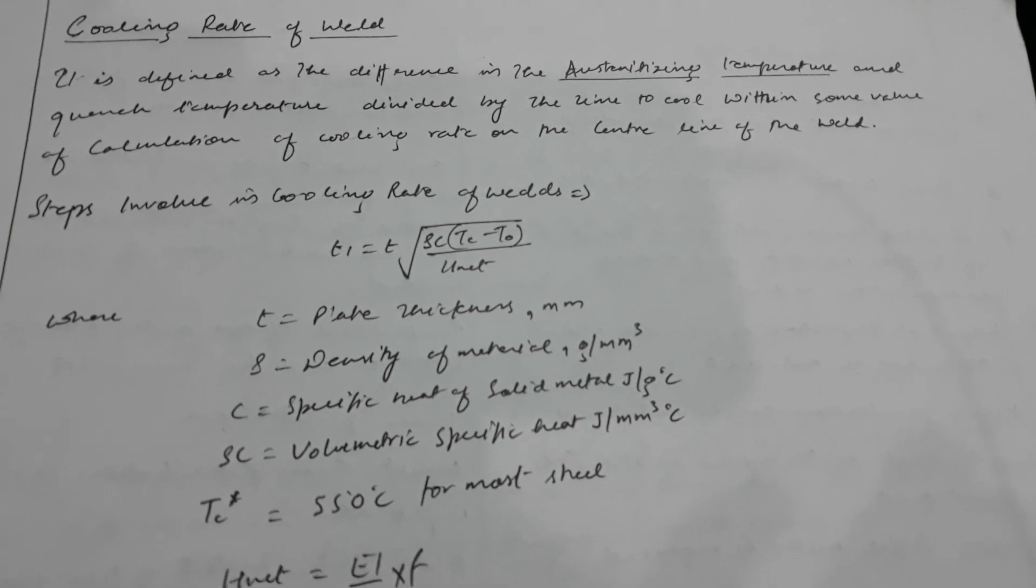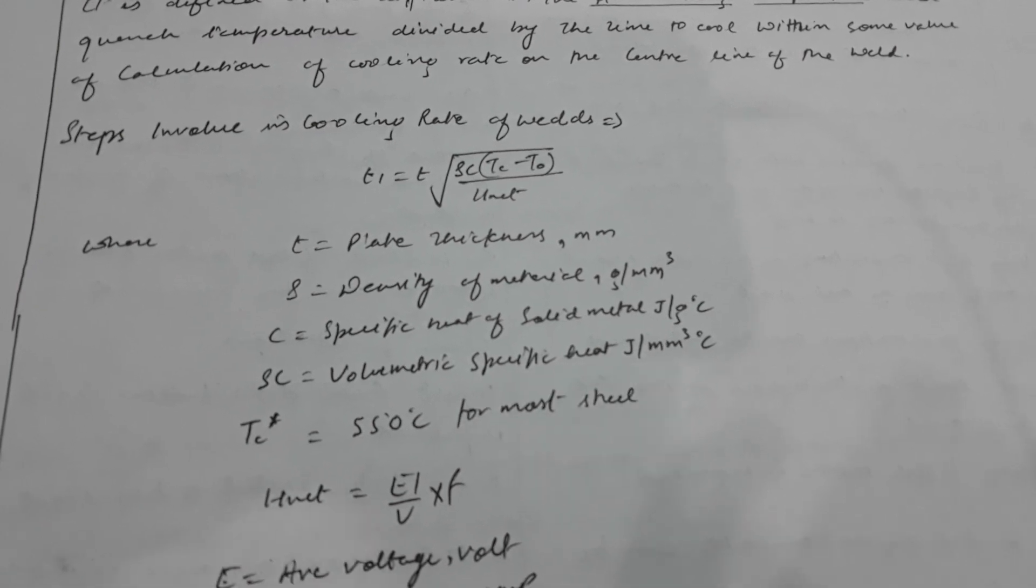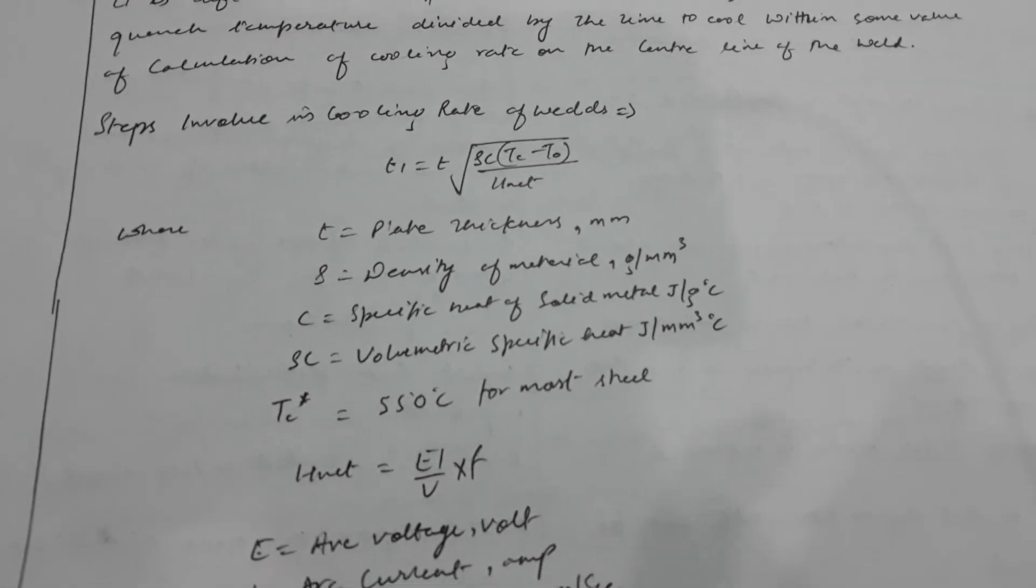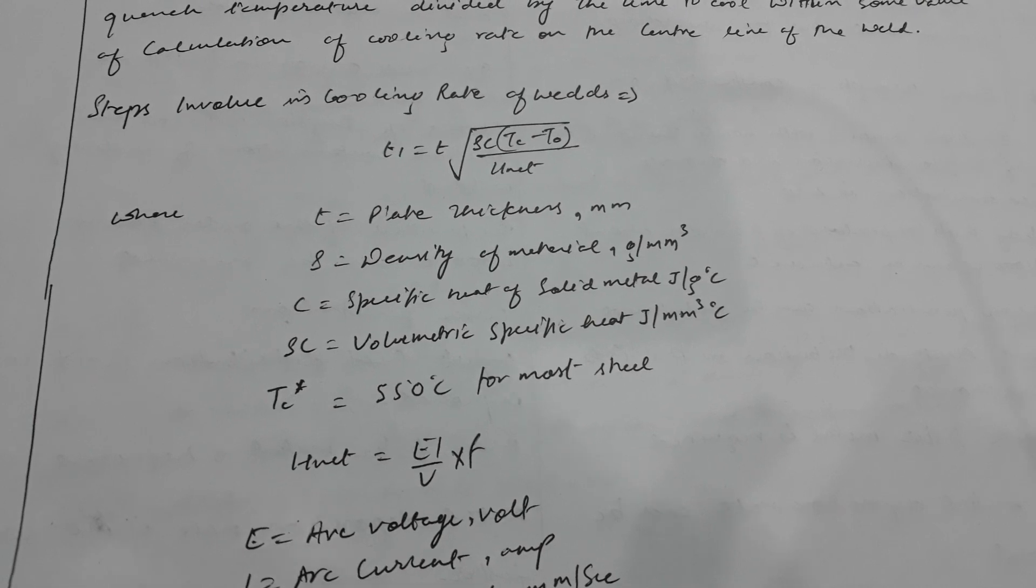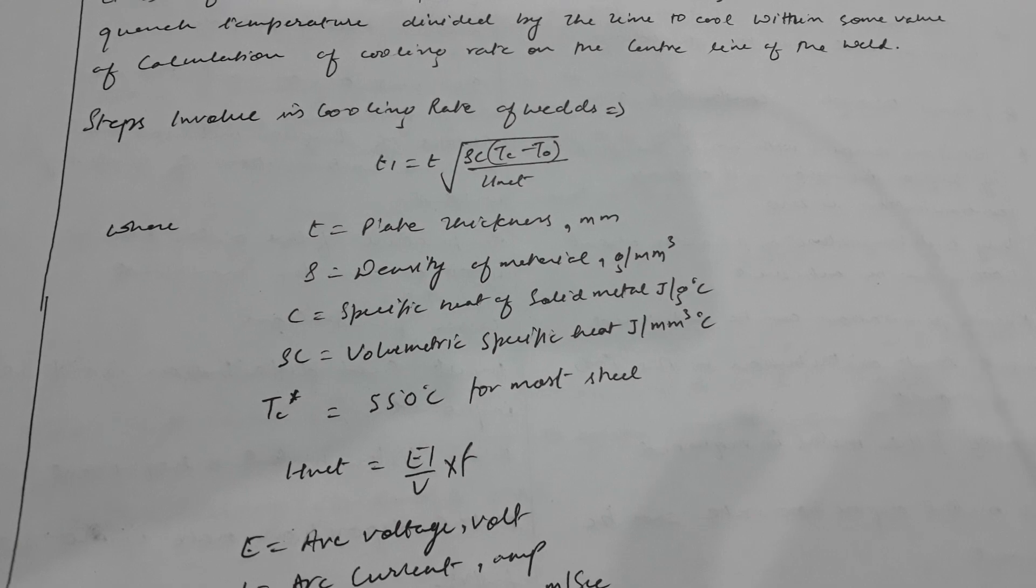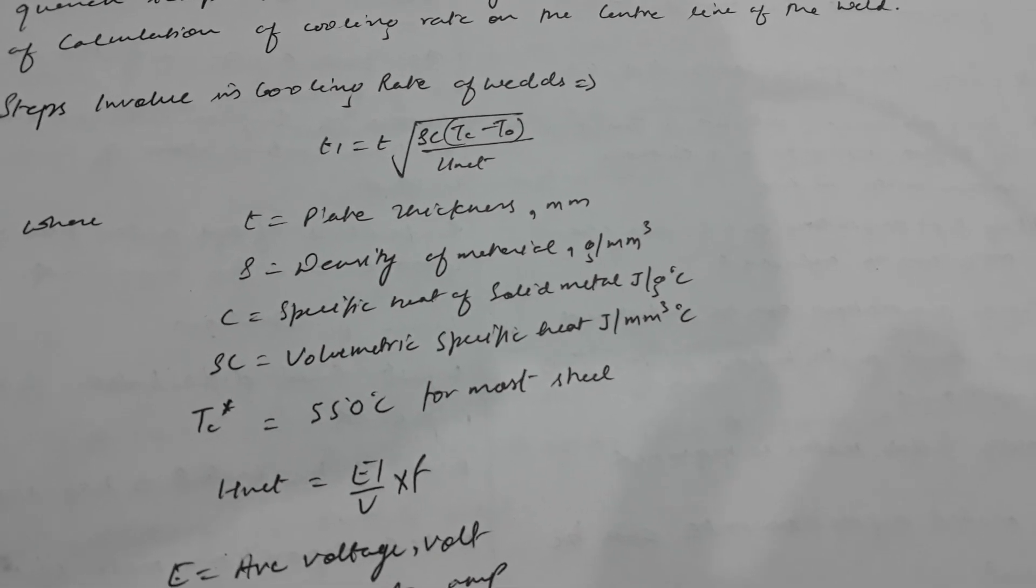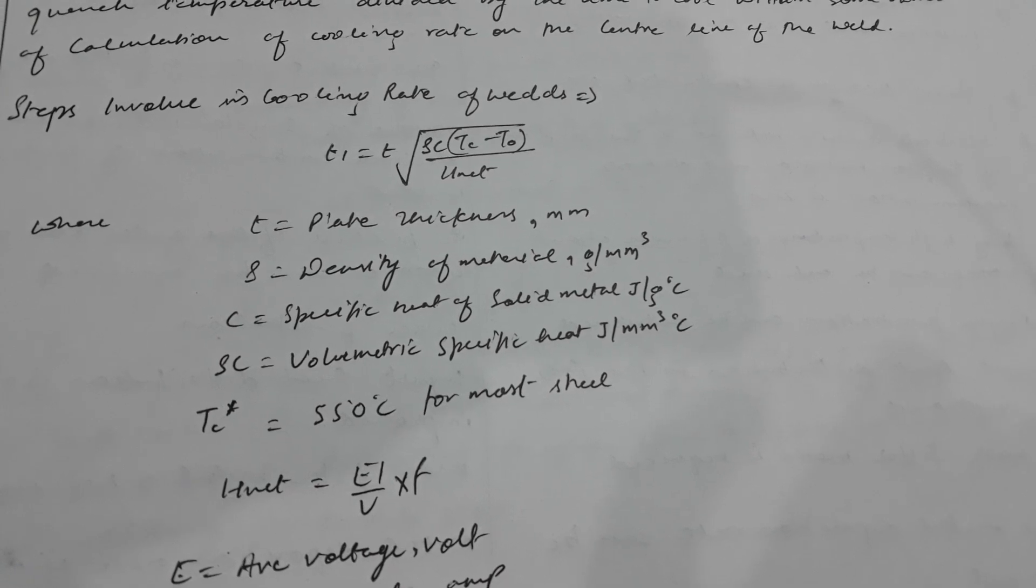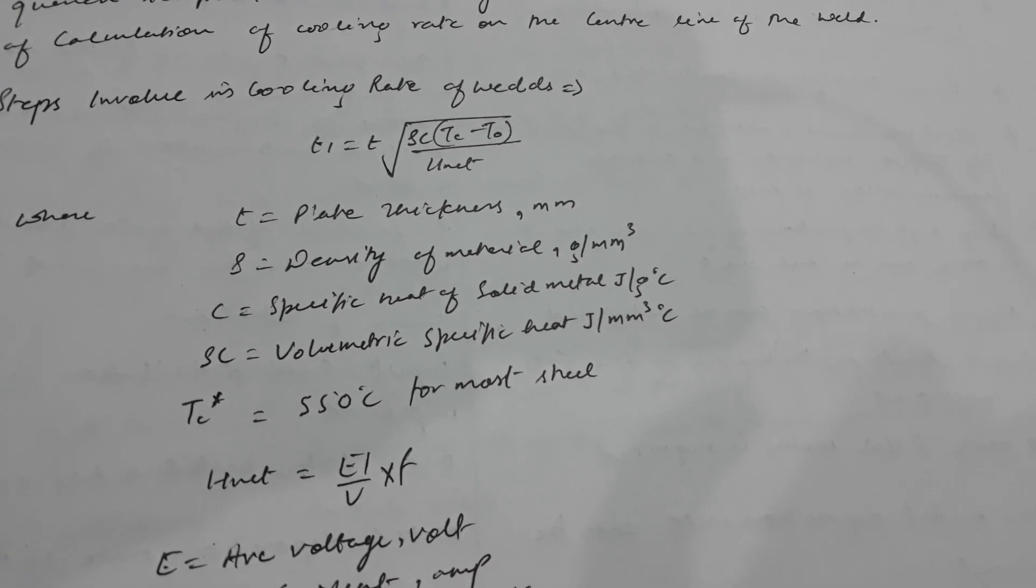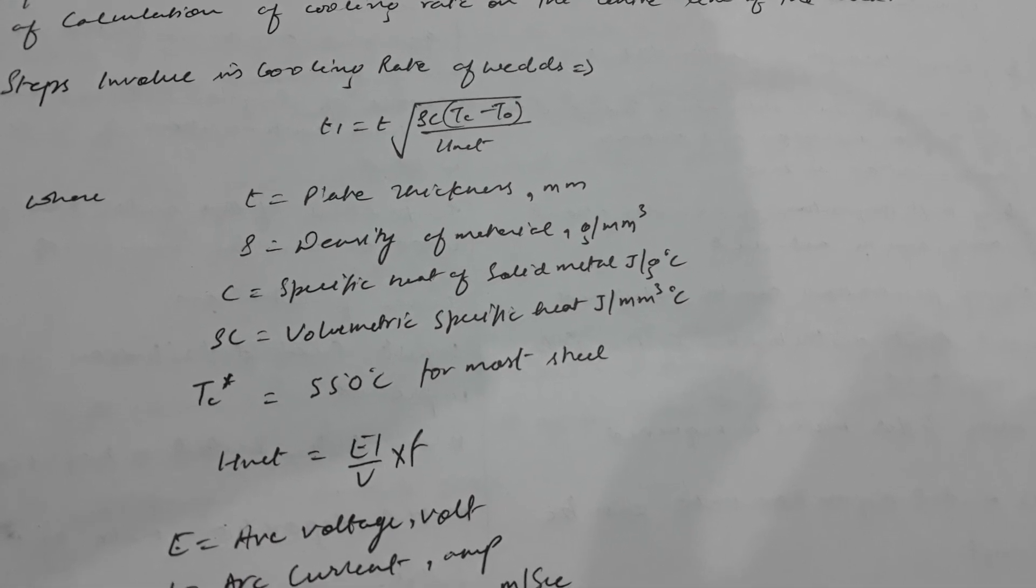Steps involved in cooling rate of weld: First, we will determine the thickness of plate. So t1 is equals to t times the square root of rho c times tc minus t0 upon h net.